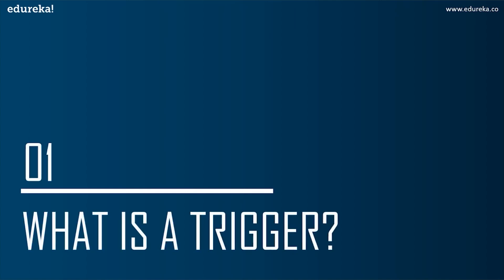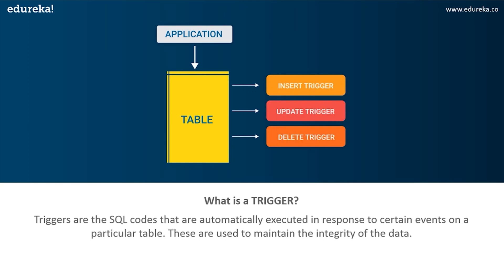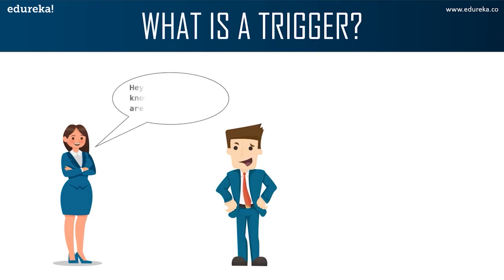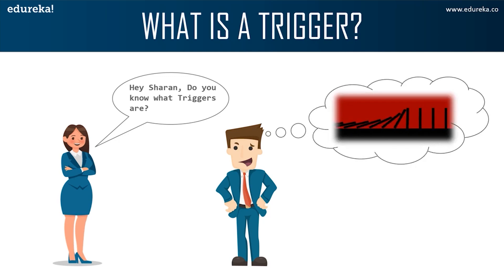The first topic in today's discussion is what are triggers. Triggers are SQL code that are automatically executed in response to certain events on a particular table. These are used to maintain the integrity of the data in a given table. A trigger in SQL works similar to a real-world trigger. Here we can see Anna is asking Sharon about triggers, and Sharon imagines a trigger as falling dominoes.